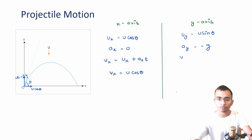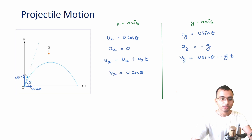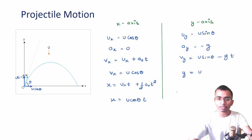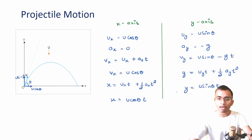Similarly, we can write v_y as a function of time t. v_y = u + at, so v_y = u sin theta + a_y·t, and since a_y is minus g, v_y = u sin theta minus g·t. This is our velocity along the y-axis as a function of time. Now, displacement along x-axis starting from origin: x = u_x·t + ½·a_x·t², and since a_x is 0, x = u cos theta · t. Similarly, y = u_y·t + ½·a_y·t², so y = u sin theta · t minus (g/2)·t².